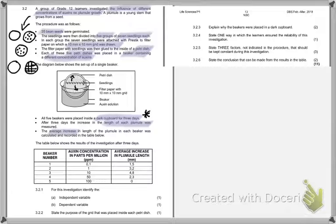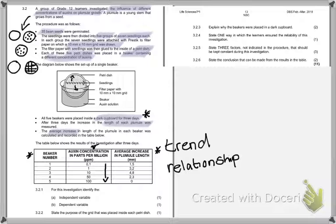After three days, the increase in the length of each plumule was measured. They wanted to see the difference. The average increase in the length of plumule in each beaker was calculated and recorded in the table below. Let's unpack the table. We have beakers 1, 2, 3, 4, 5. We have the auxin concentration in parts per million, going from the lowest concentration to the highest concentration as we go down. Then average increase in plumule length in millimeters.